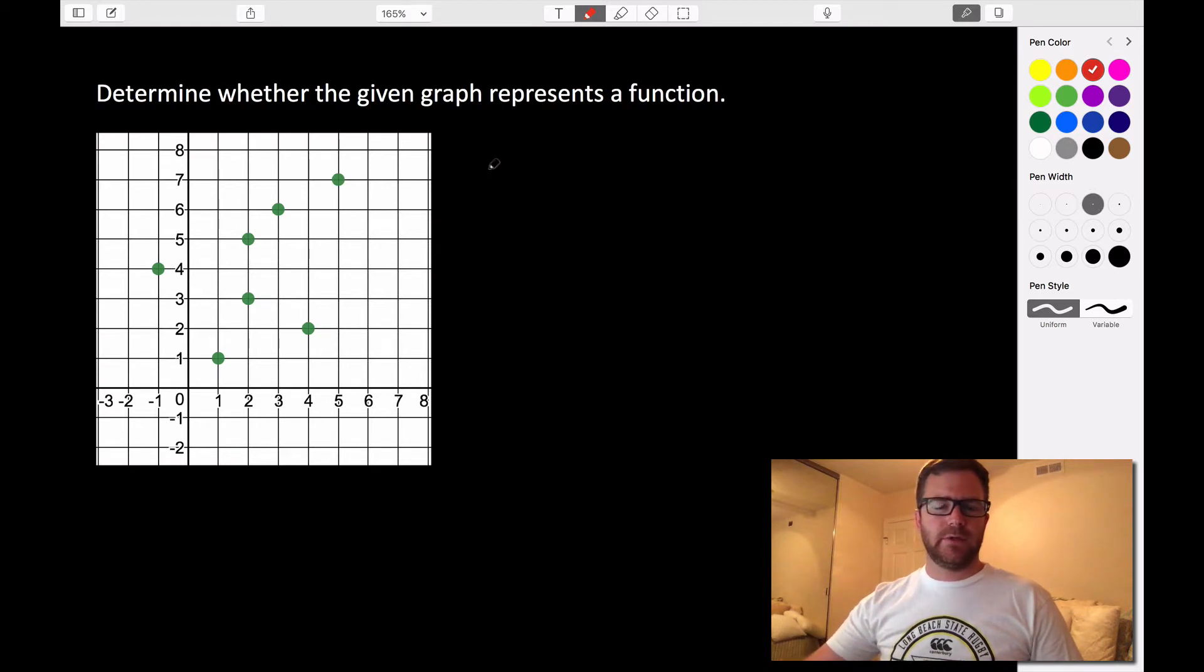So if you recall back to what we talked about, what it means to be a function, that means that for every input, every x value, we should only get one output. And we looked at how to do that algebraically, but how would we do that if we're given a graph?